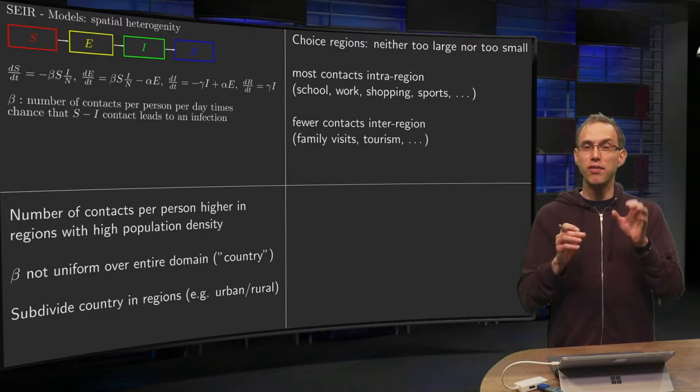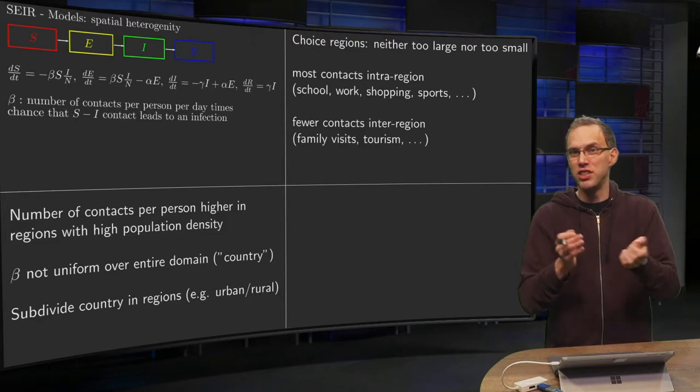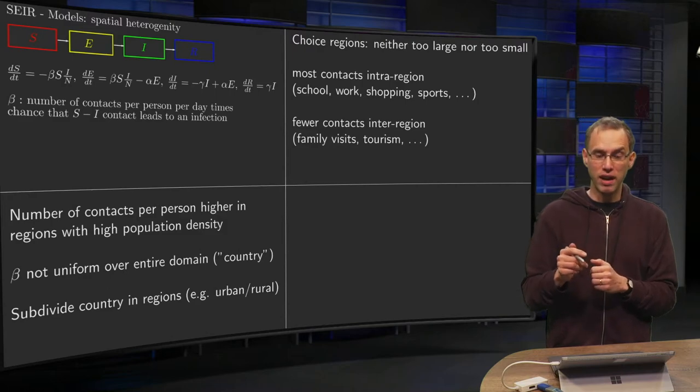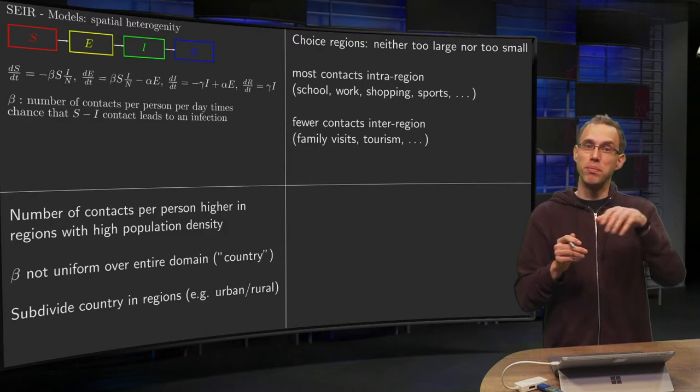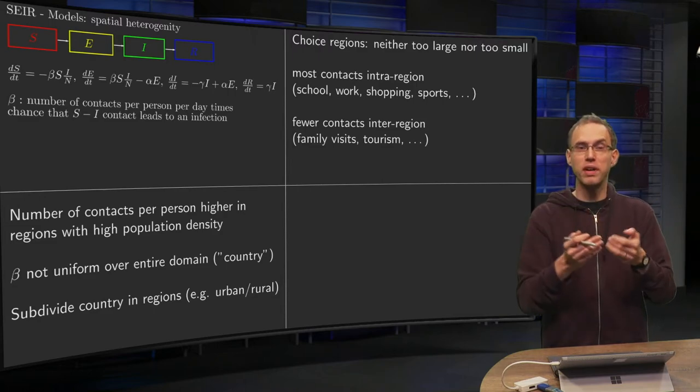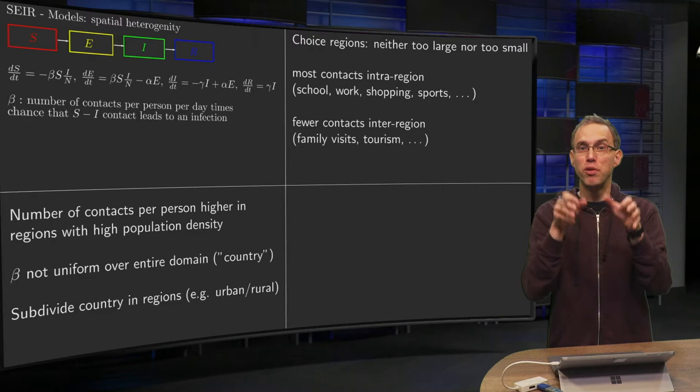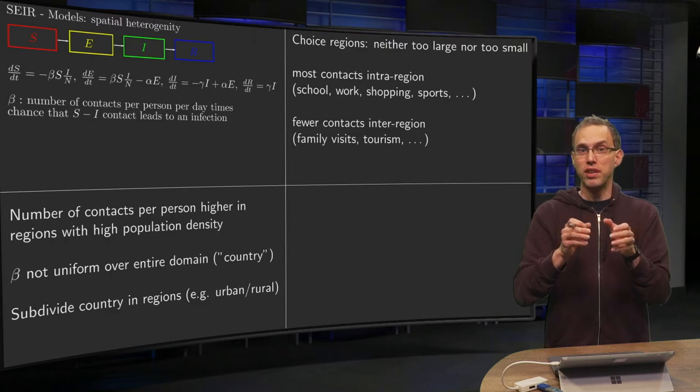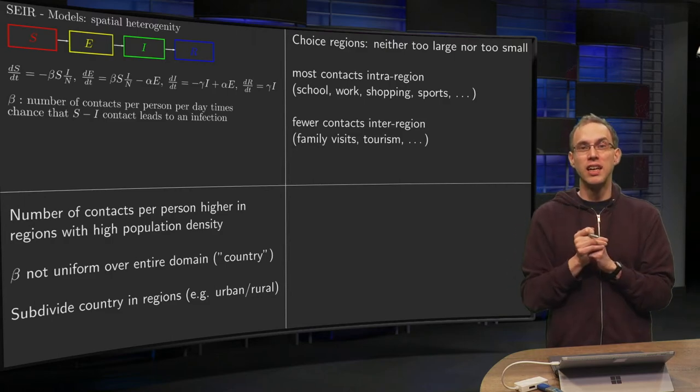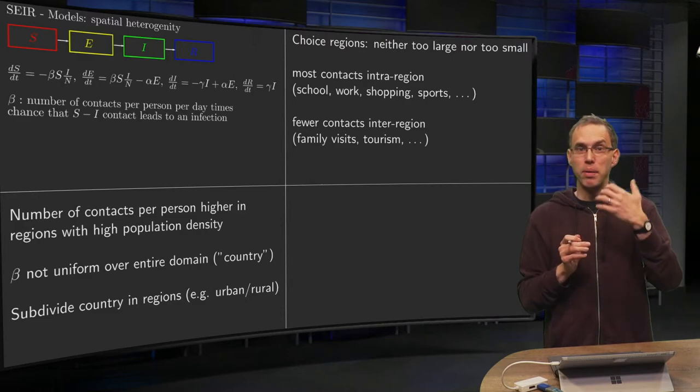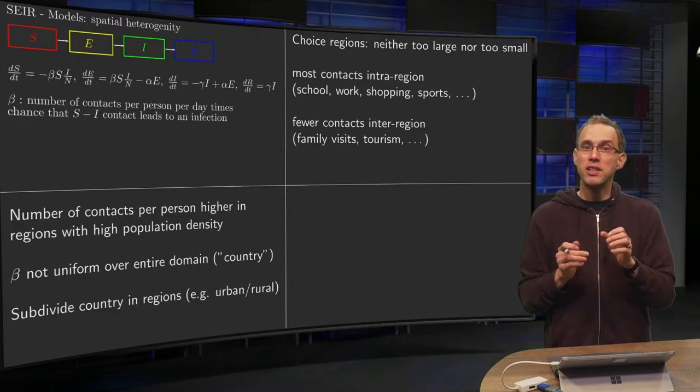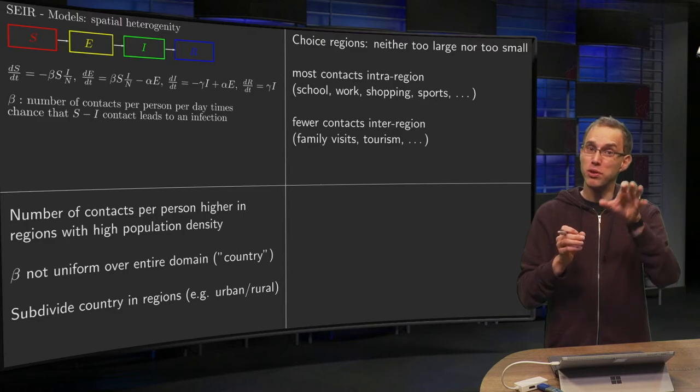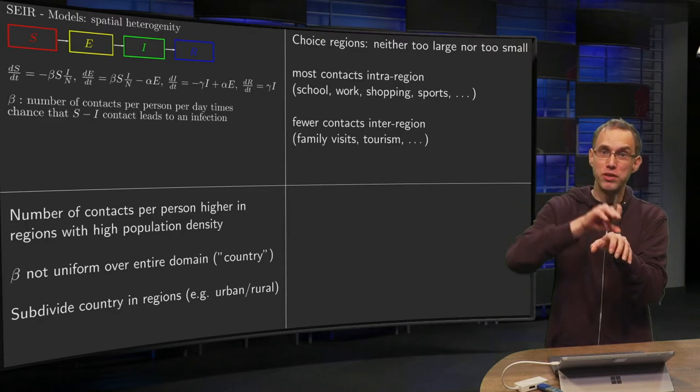Second observation, if you think about regions, for example a region is a city or maybe a city and its surroundings, then most of the contacts people have are inside a single region. People are going to work, to school, to sports, to do shopping and so on. If you think about contacts between different regions, then those contacts are much more infrequent, maybe due to family visits, tourism, whatever. So the type of beta will also be different when you're talking within your region or when you're talking between regions.